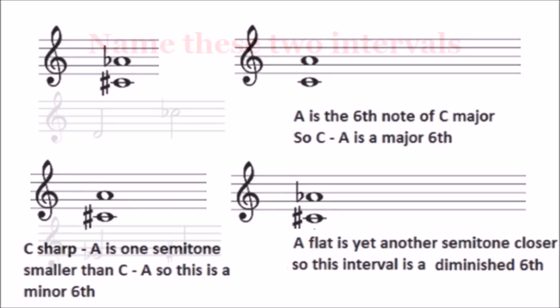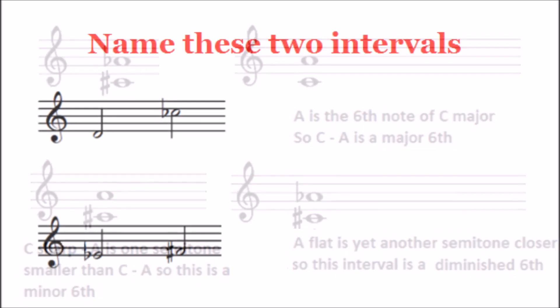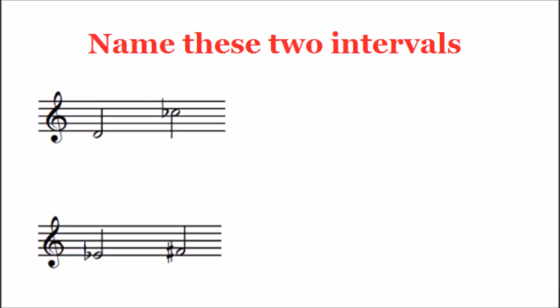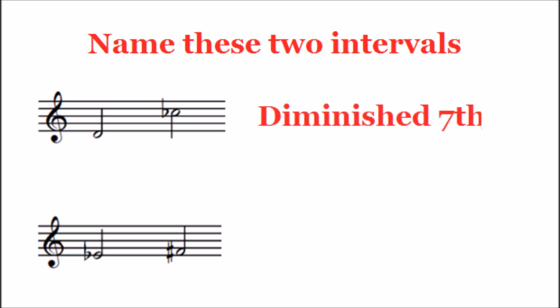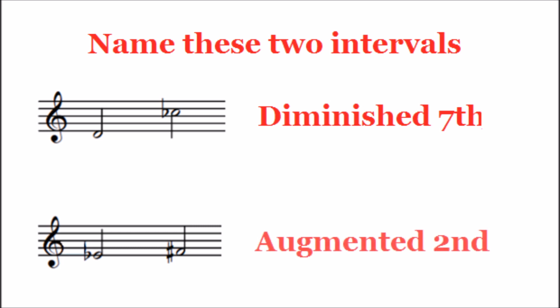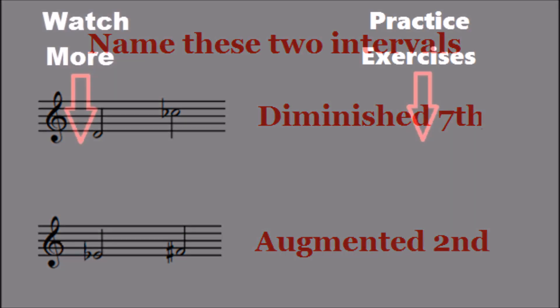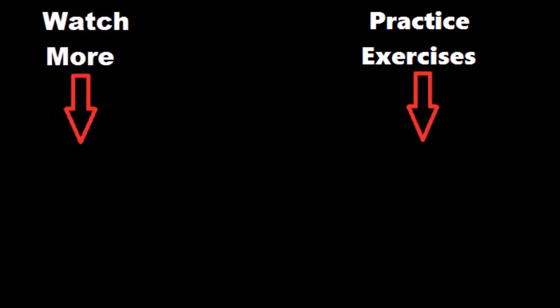Now let's see how much you have understood — can you name these two intervals? The first one is a diminished seventh and the second one an augmented second. For more practice on this topic, click the card on the right, and I'll see you in the next video.